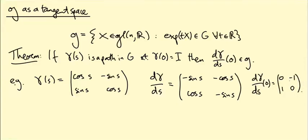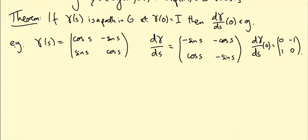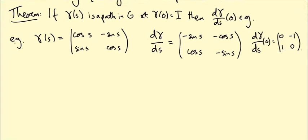And indeed, that is in the Lie algebra, little g, of the rotation group in two dimensions. We've seen that's the anti-symmetric matrices. So this theorem is useful because it gives us a way of producing elements that we know are inside the Lie algebra. So this theorem will be a crucial part of proving that little g is a vector space preserved by Lie bracket. So let's prove it.